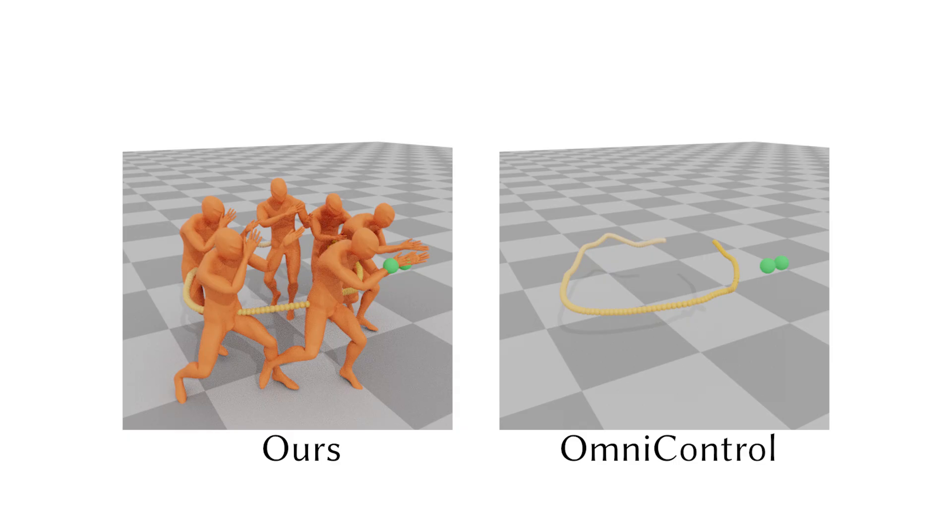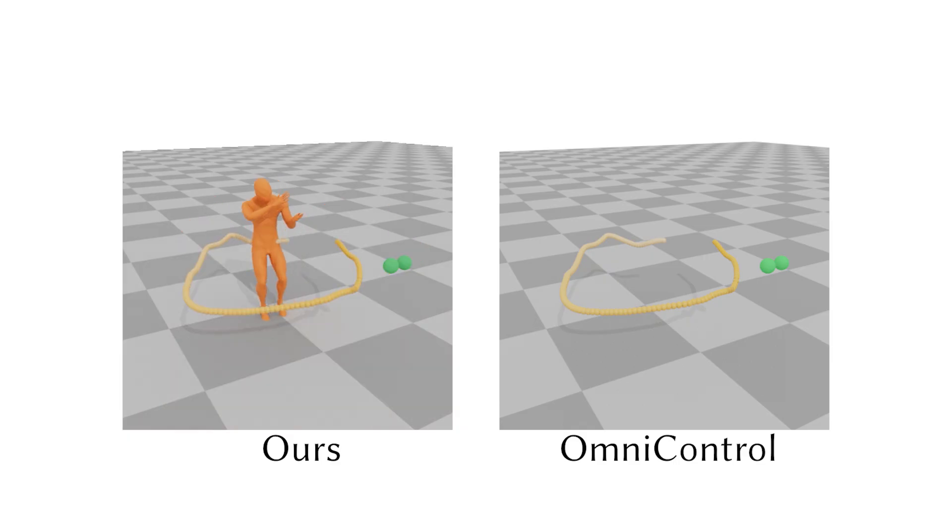In another aiming example, we control the hand position to direct the character toward the outside of the screen. The results generated by our method accurately adhere to this control. Omni-Control once again neglects this sparse control, resulting in a motion that turns the character away from the screen.